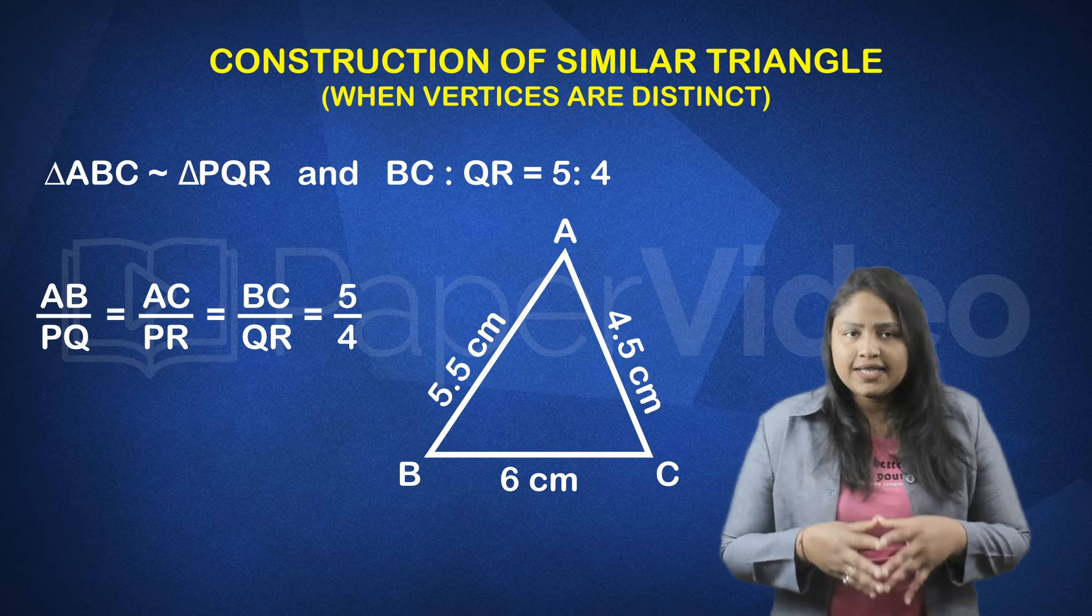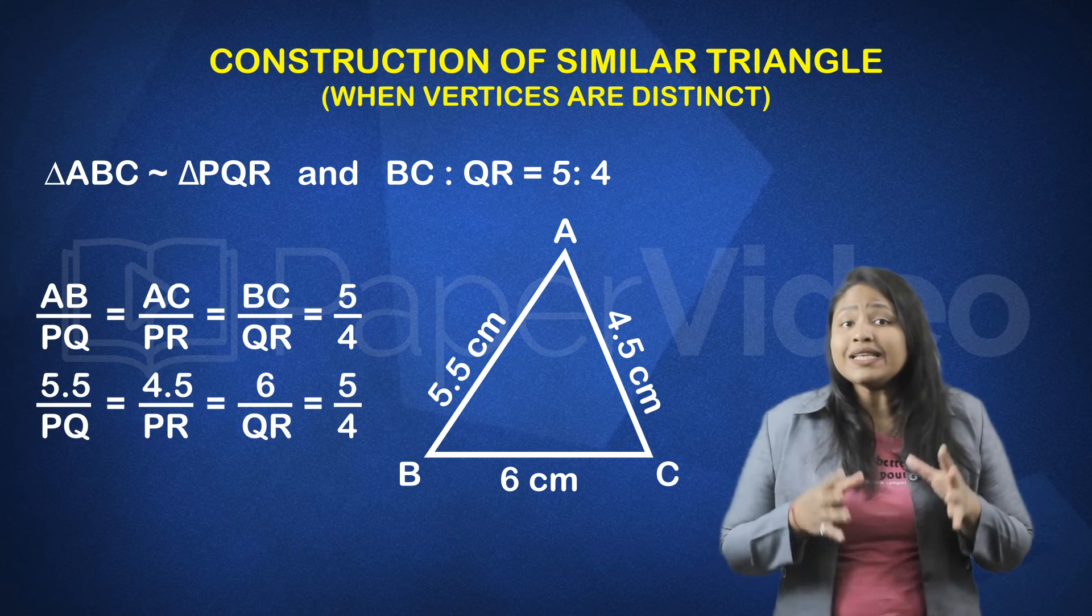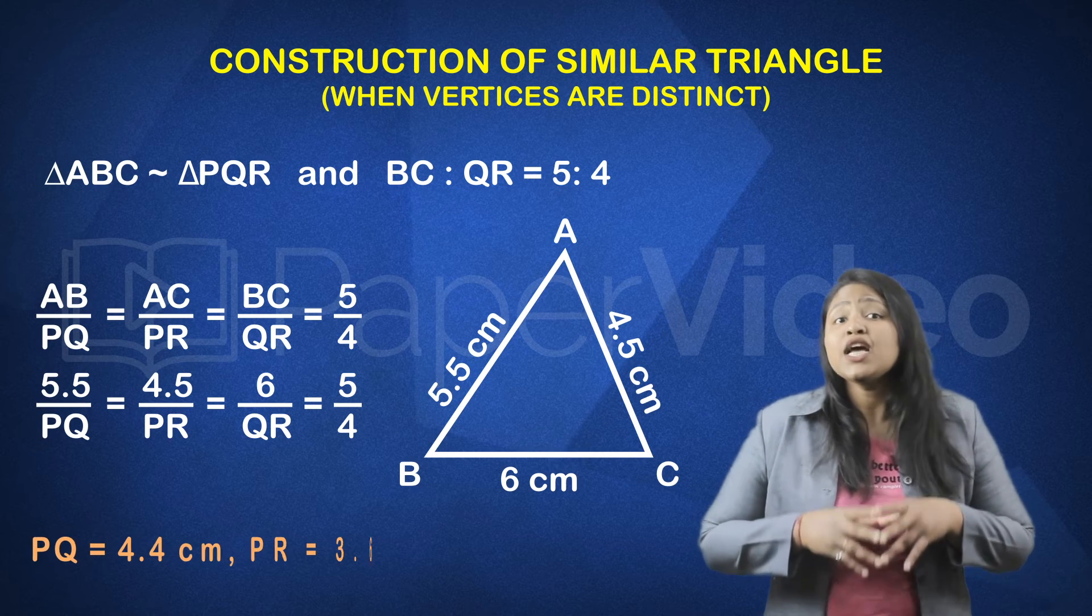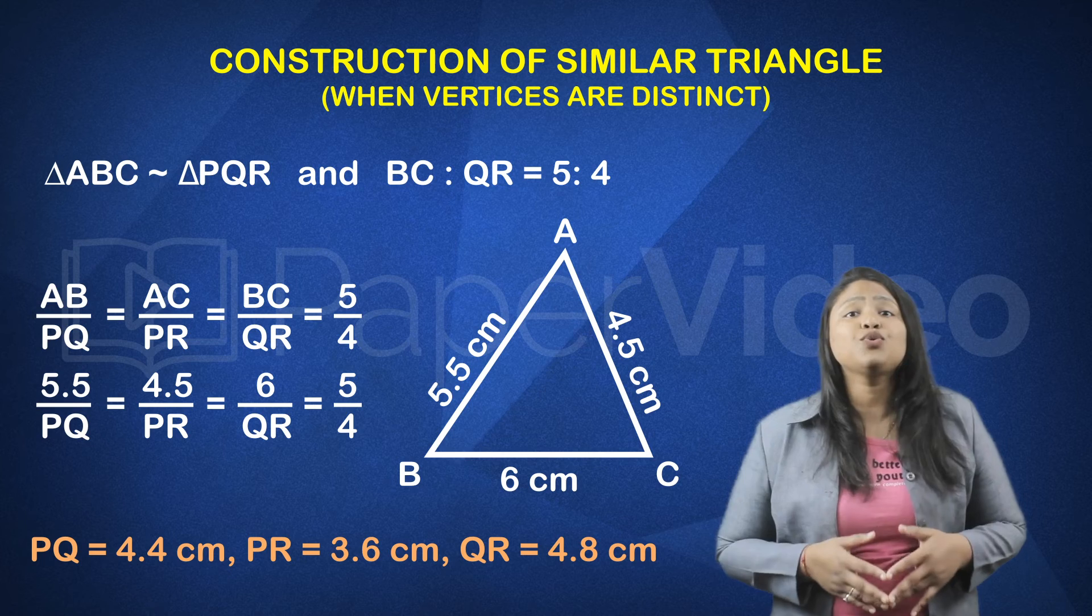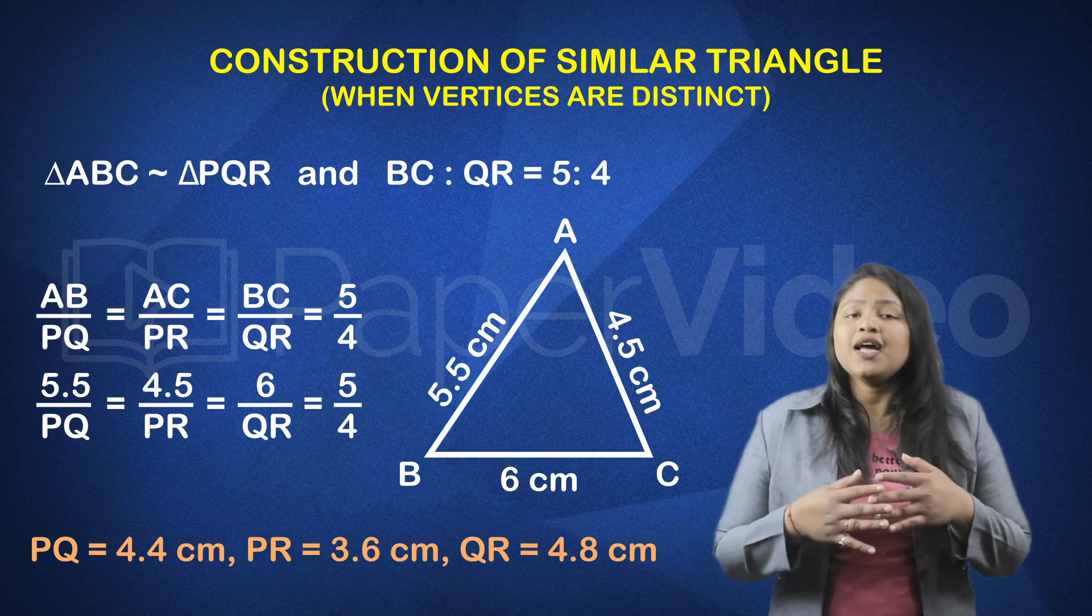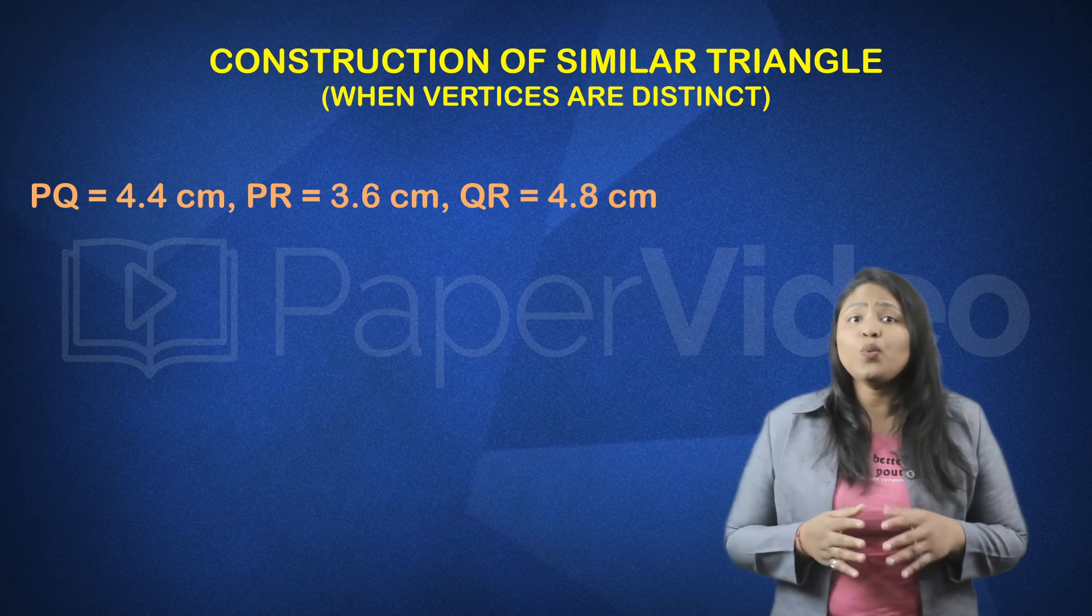We know that the lengths of the sides AB, AC and BC. So plugging in their values in this equation we can find the corresponding lengths of the side PQ, PR and QR like this.